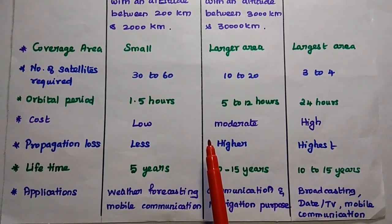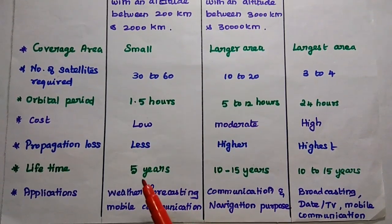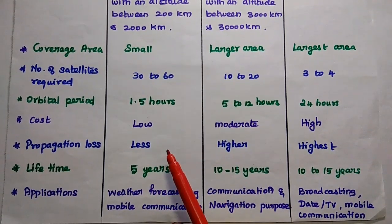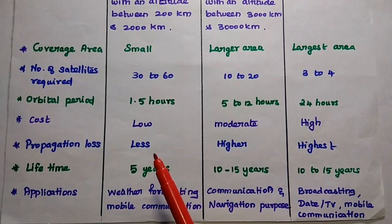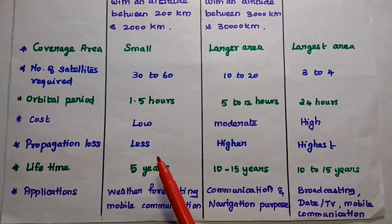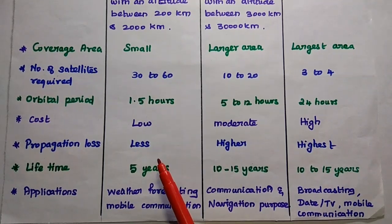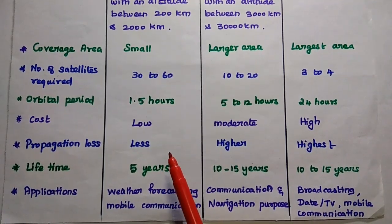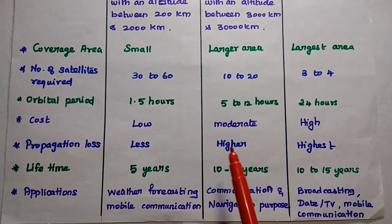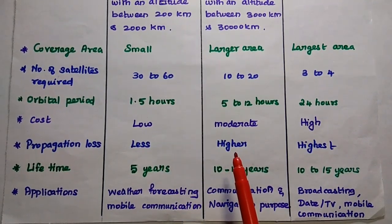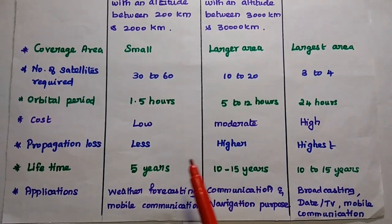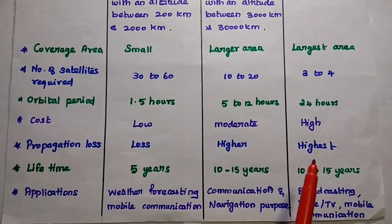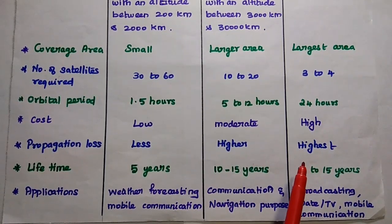Regarding propagation loss: LEO is very close to earth's surface, so it has very less propagation loss. MEO has higher propagation loss than LEO. GEO has the highest propagation loss.